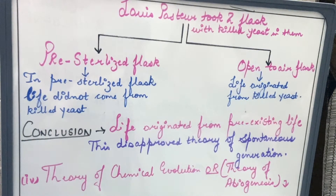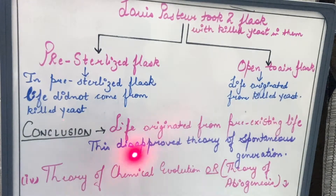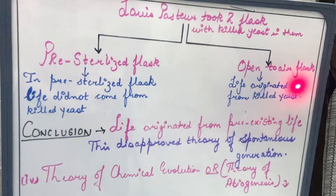Pasteur found that in the pre-sterilized flask, no life originated. But in the flask open to air, life originated from the killed yeast. He concluded that life originated from pre-existing life, which disapproved the theory of spontaneous generation.